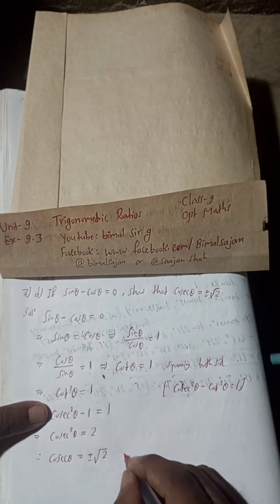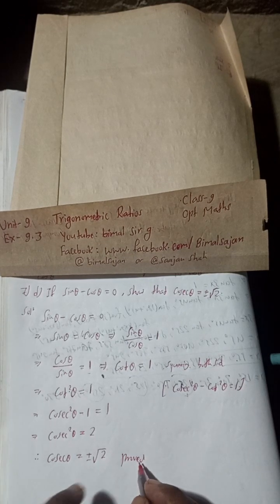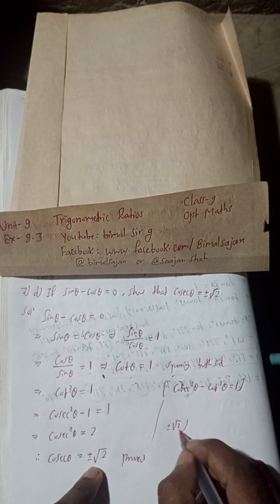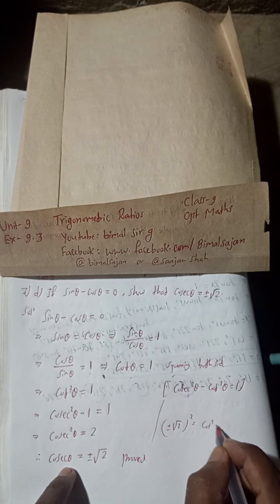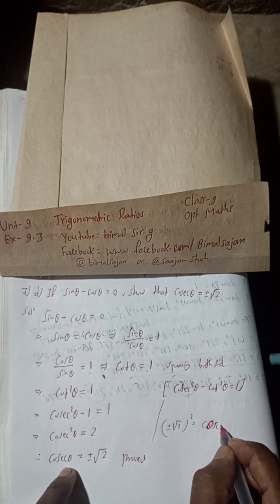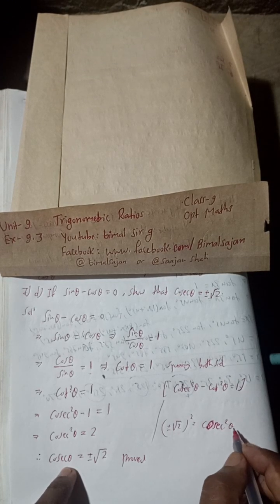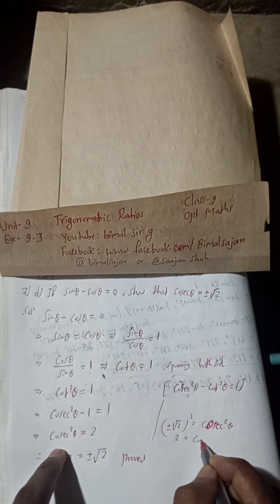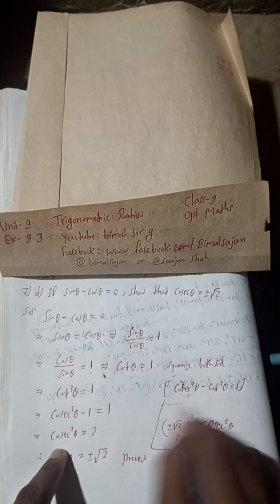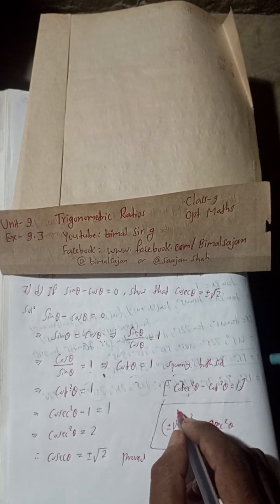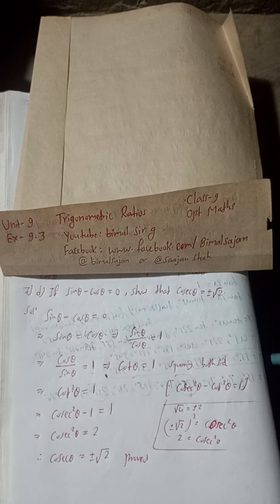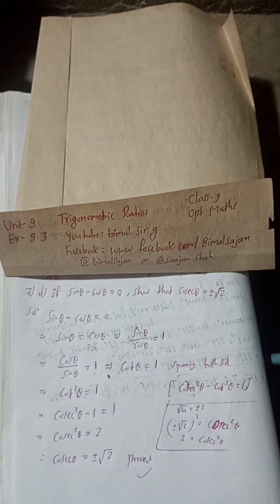This is proved. For further clarification: if we take plus or minus root 2 and square it, we get cosec² θ, which gives 2. And similarly, the square root of 4 gives plus or minus 2 — that's the logic here. This is the solution for this problem. Keep watching, keep supporting. See you in the next video. Radhe Radhe, Jai Shri Krishna.